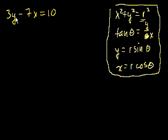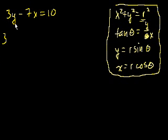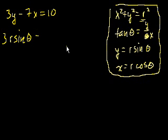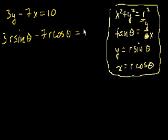The simplest thing — we have a y and an x, so we can just substitute. We know that y is equal to r sine of theta, and x is equal to r cosine of theta. So let's substitute: 3 times y, which is r sine of theta, minus 7 times x, which is 7 times r cosine theta, is equal to 10.